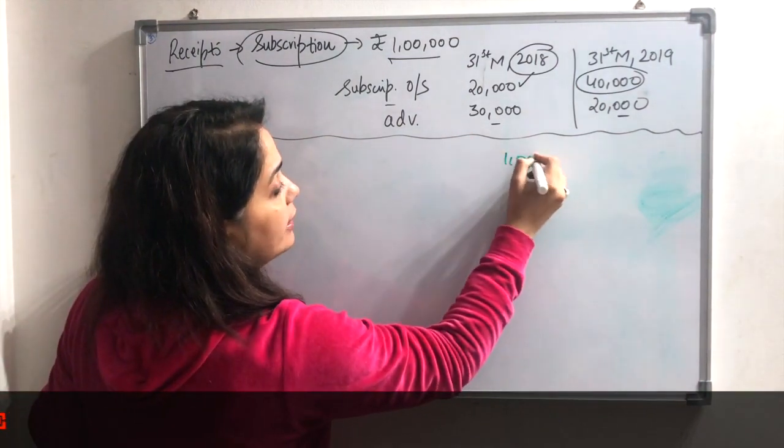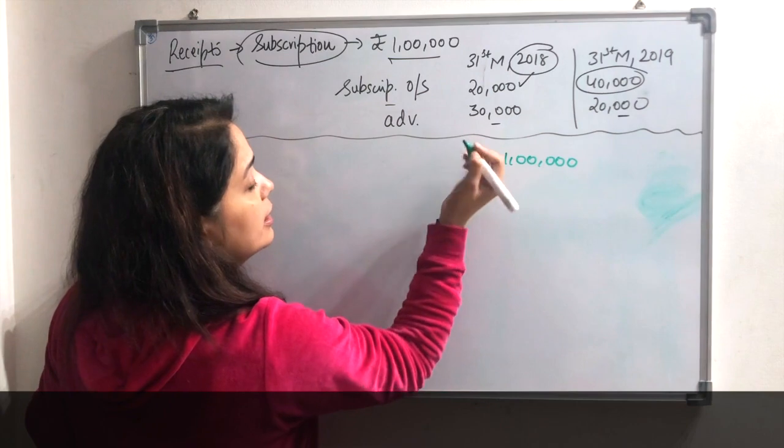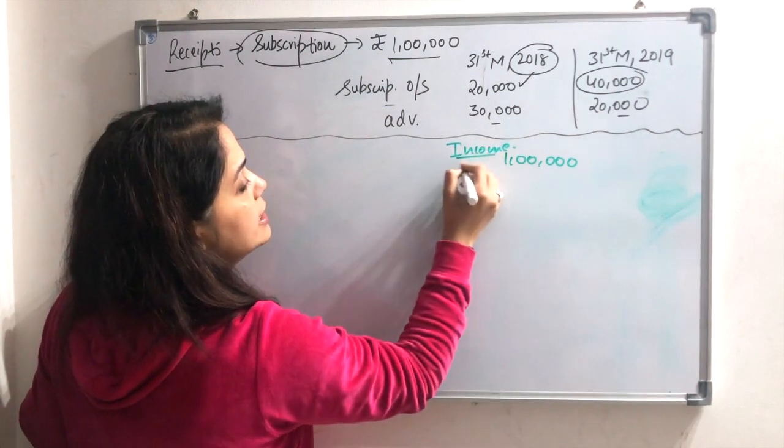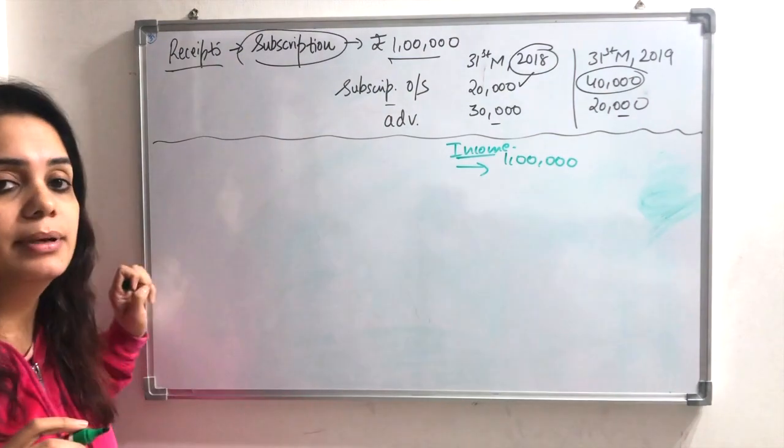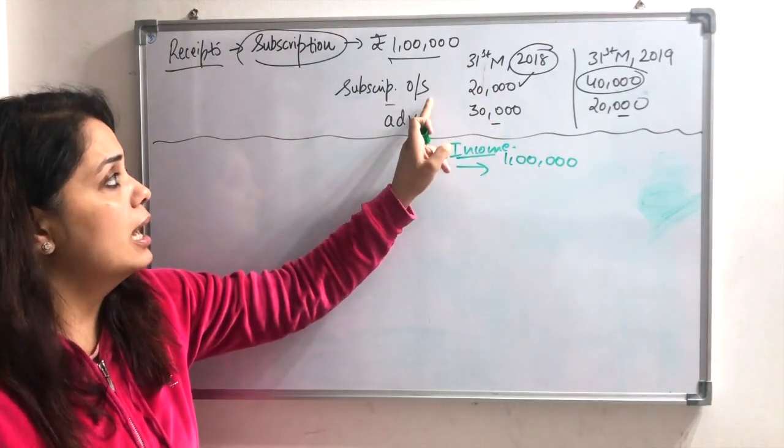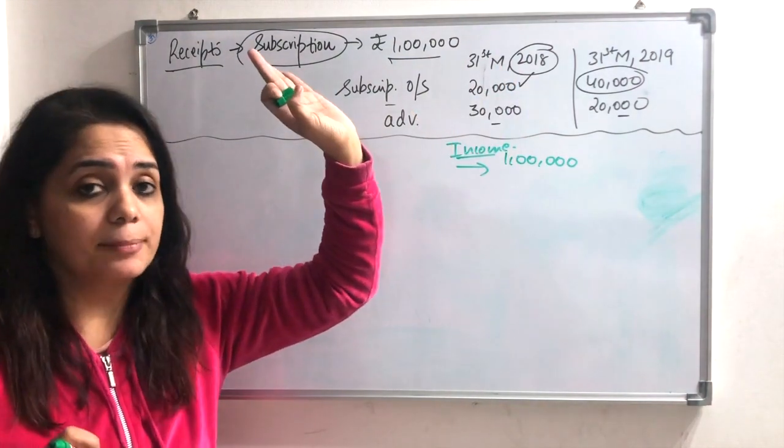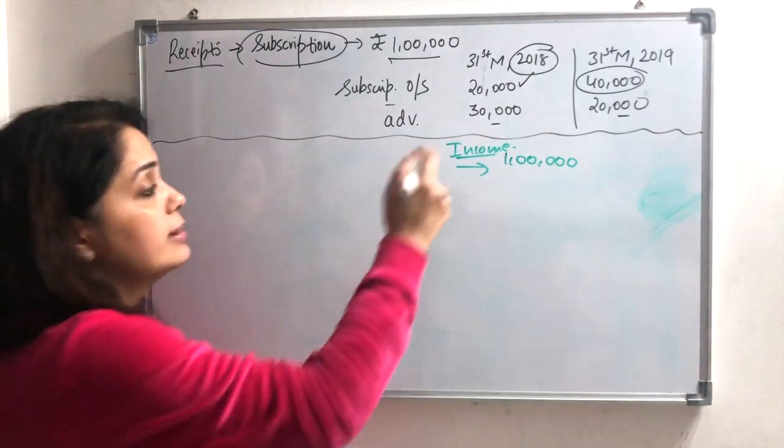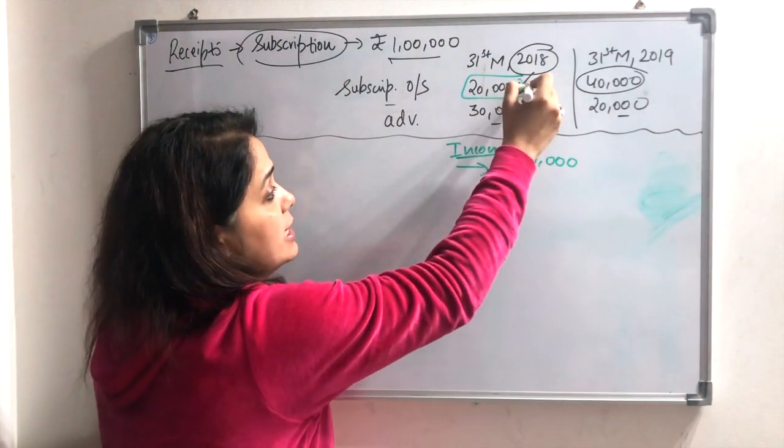Subscription amount is my 1 lakh. I will show you the income and expenditure account. Now I will not make a whole format, I will just explain the concept. Now I will have a subscription outstanding last year. That means this outstanding is my last year.